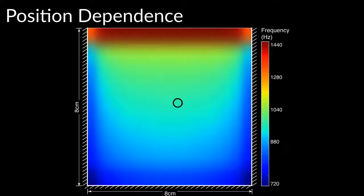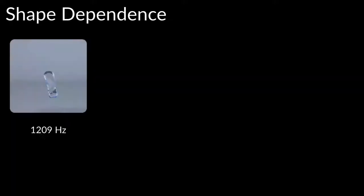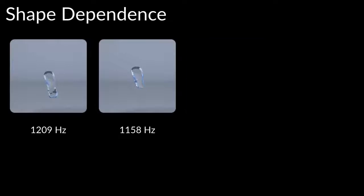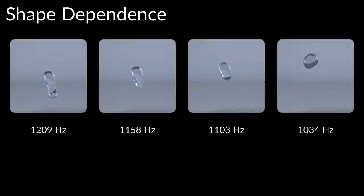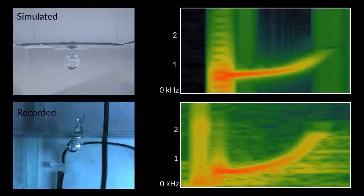If we place a 3mm bubble at different locations in an 8cm tank, we see that the frequency can vary by over 700 Hz depending on the position. It's lower near the tank walls and rises sharply near the fluid surface. A bubble's shape can also affect its frequency, such as a bubble which goes from an ellipsoid to a sphere, causing its frequency to drop.